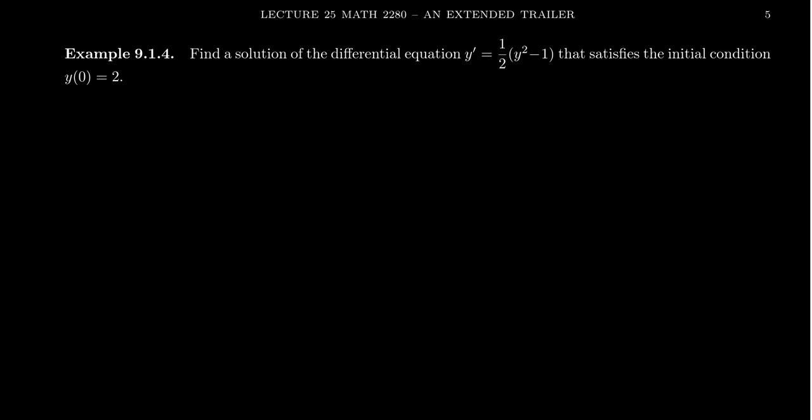So in a previous video, we looked at the differential equation y prime equals 1/2(y² - 1). And we saw that the general solution to this differential equation was (1 + ce^t)/(1 - ce^t). So we checked that this was a solution to the differential equation. As this is a first order differential equation, there'll only be the single parameter c. And so we found the general solution. What we want to do now is actually find a particular solution using the initial value y(0) = 2.